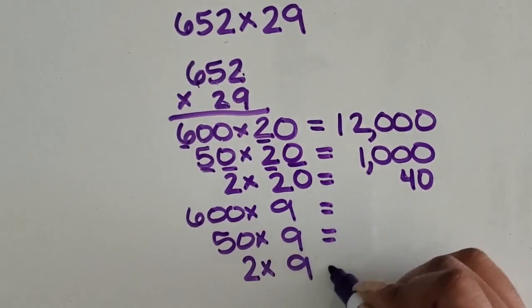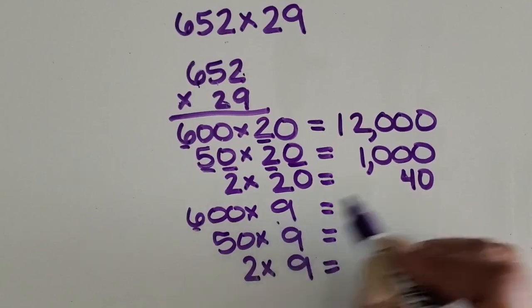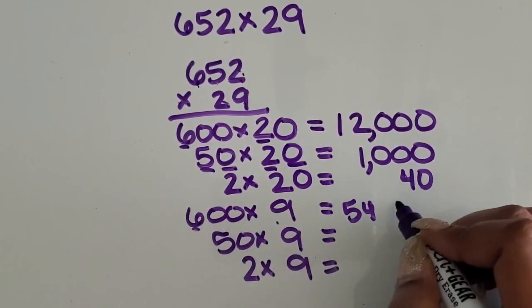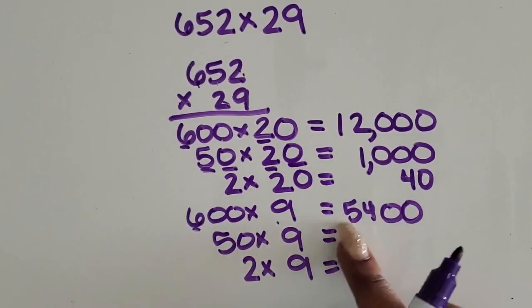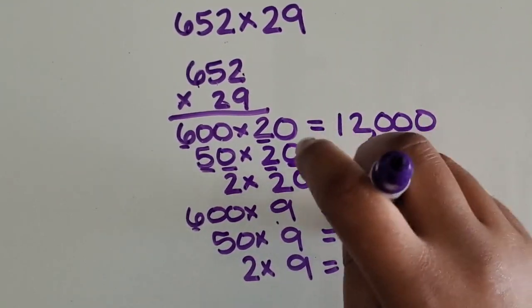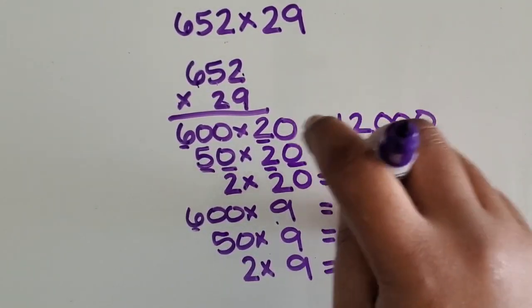Keep going. 6 times 9 is 54. 100 times greater would be 5,400. This is not lined up correctly because there's 4 digits. So I'm going to rewrite that 5,400.